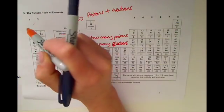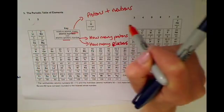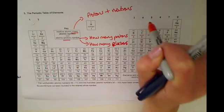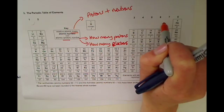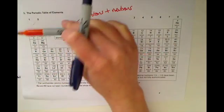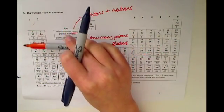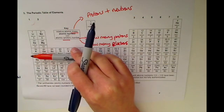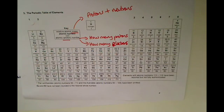So the group number tells you how many electrons there are in the outer shell. And the period — one, two, three, four, et cetera — tells you how many electron shells there are.